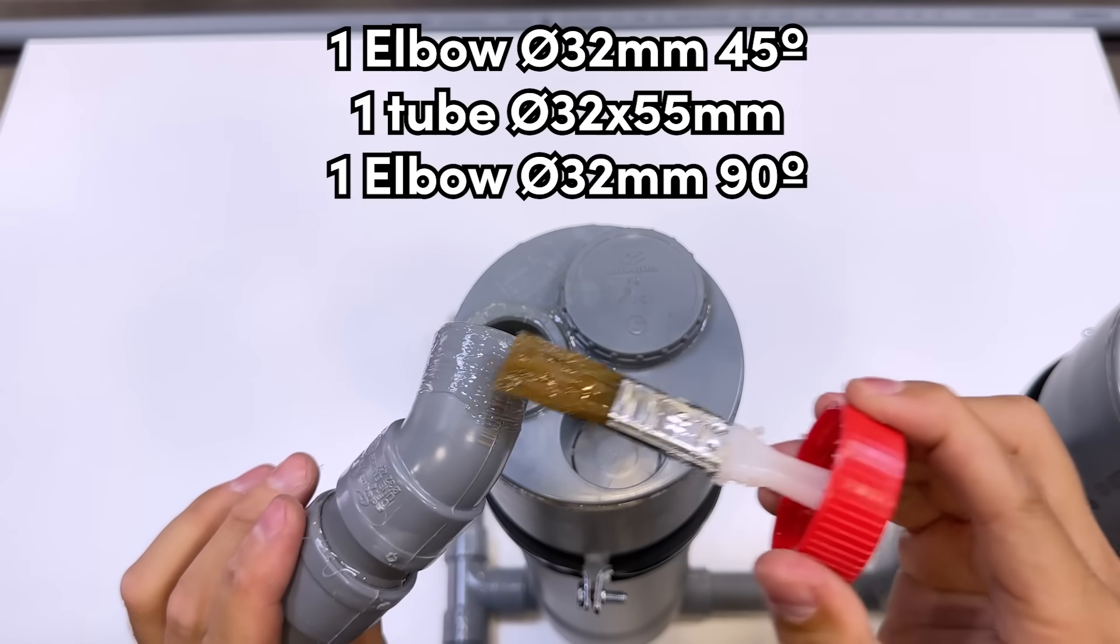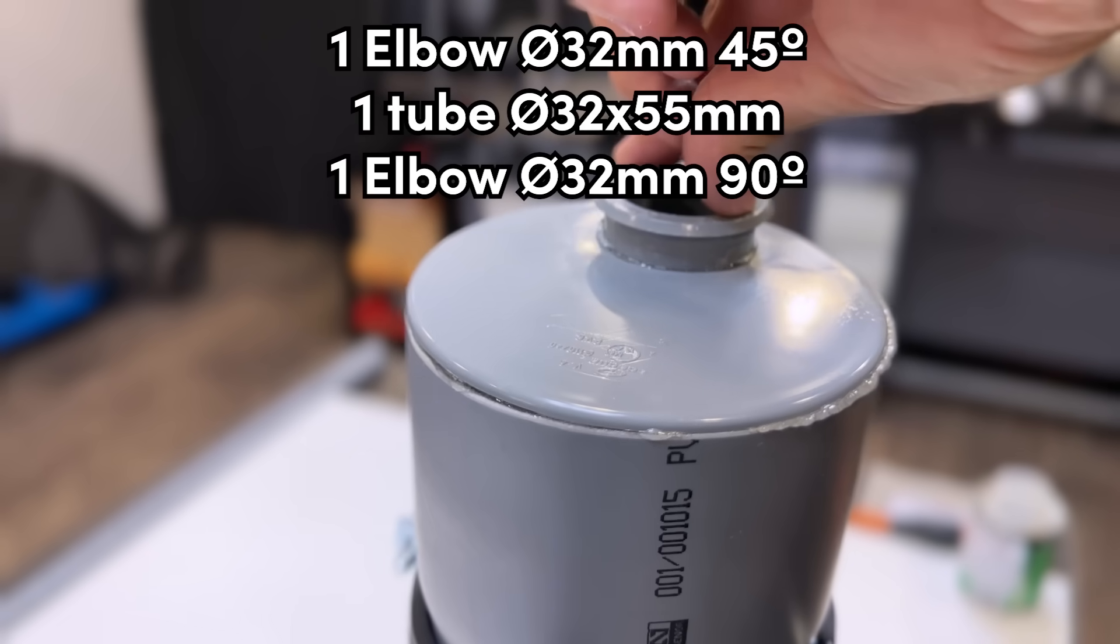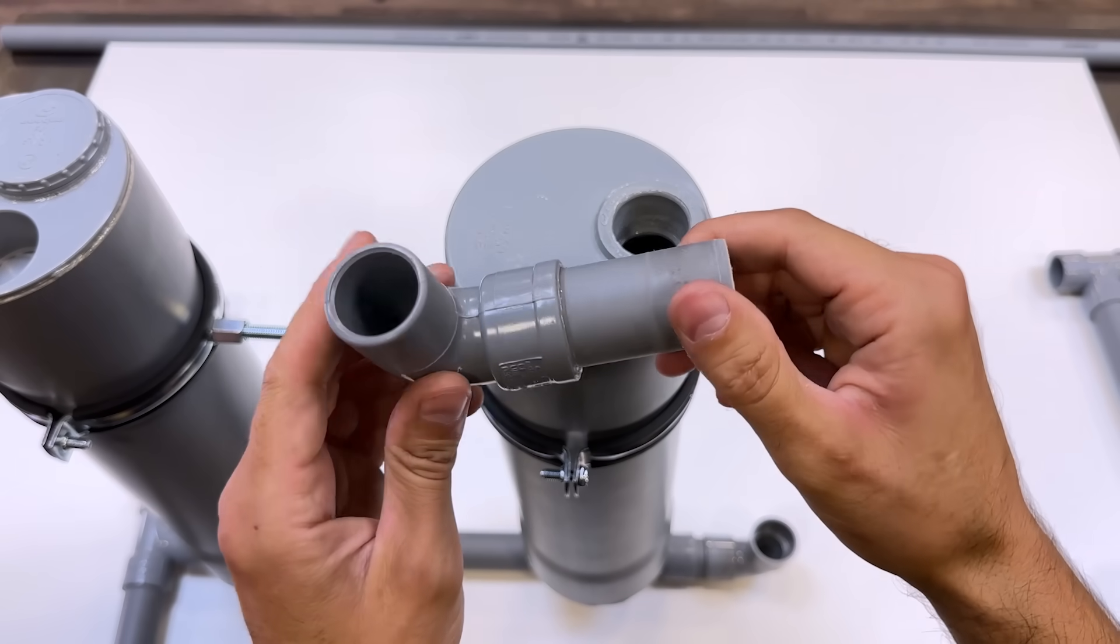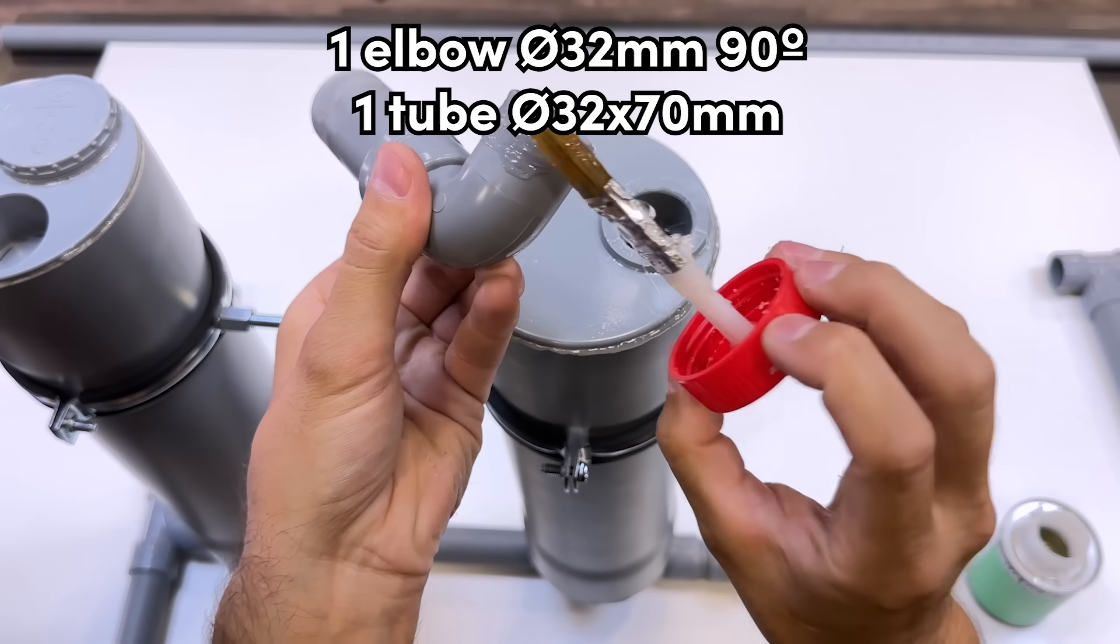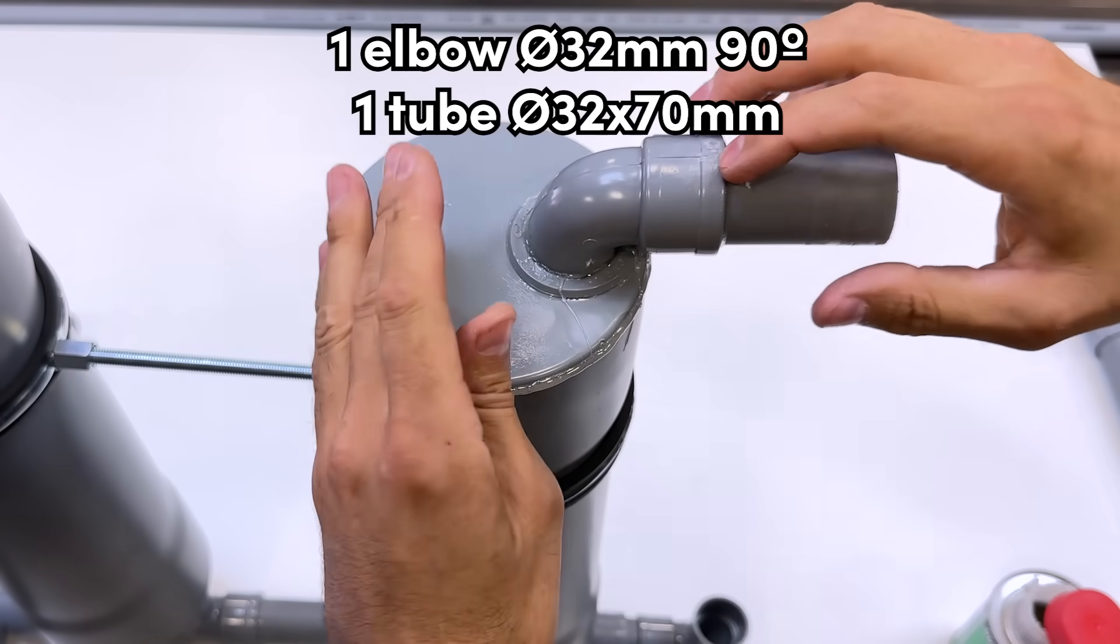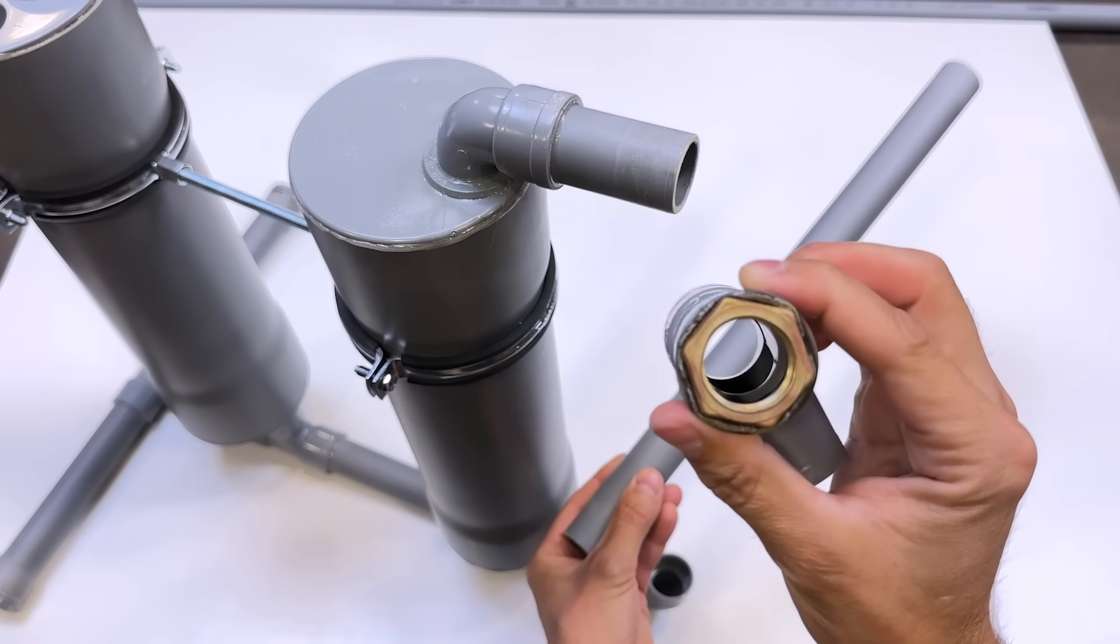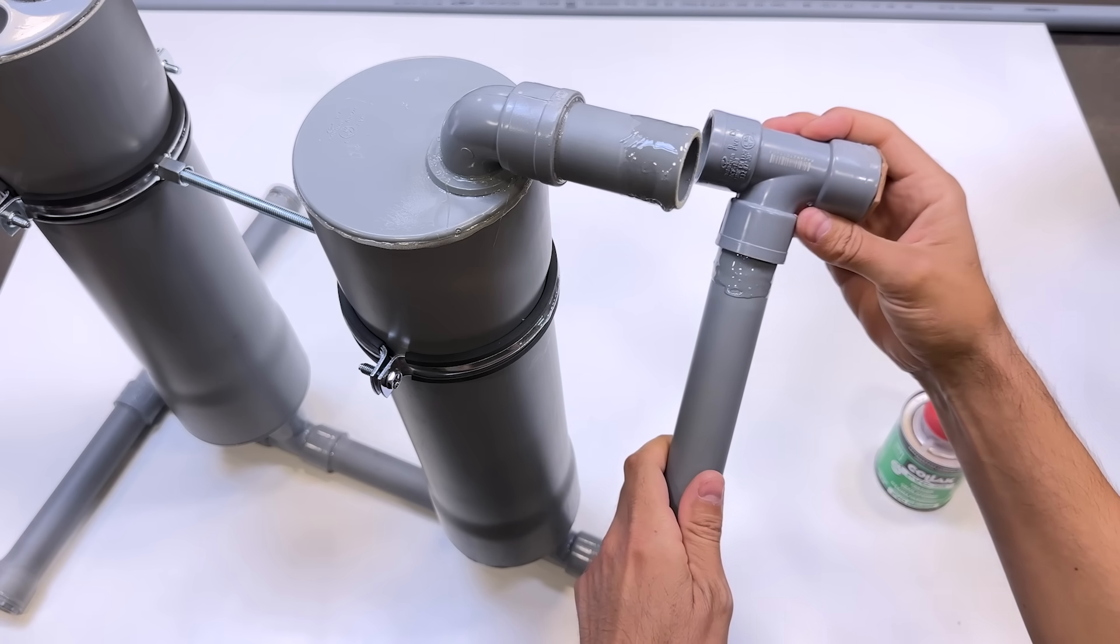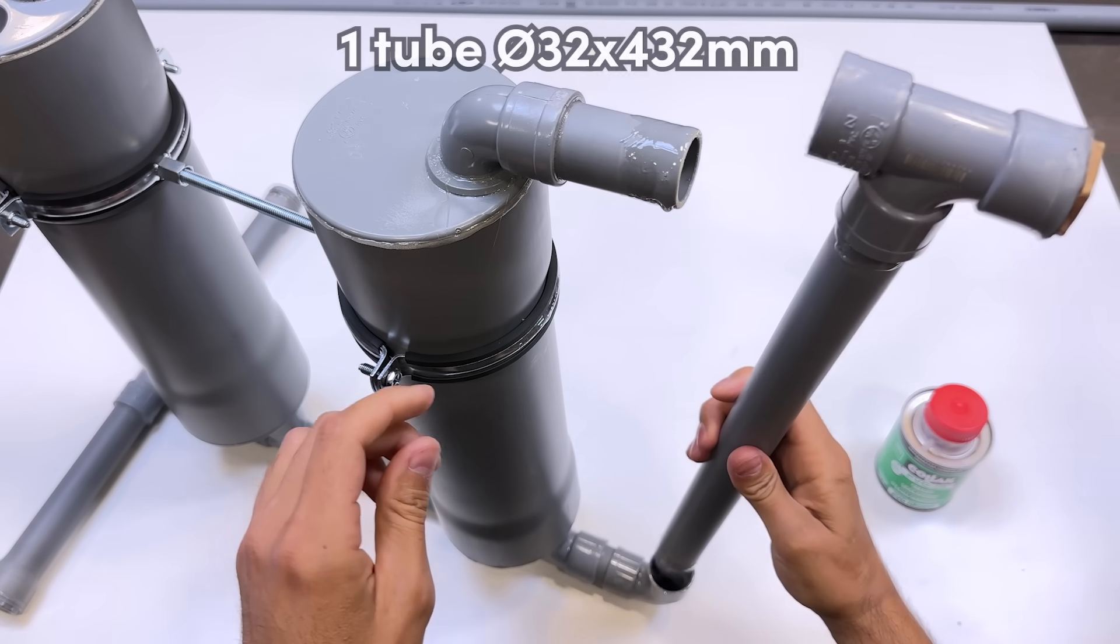Now we glue this assembly consisting of a 45 degree elbow, a 32 for 55 millimeter diameter pipe, and a 90 degree elbow. And here we will glue this 90 degree elbow together with a 32 for 70 millimeter diameter pipe. We will finish by gluing the T-shaped coupling to which we previously attached the fitting, along with this 32 for 432 millimeter diameter pipe.